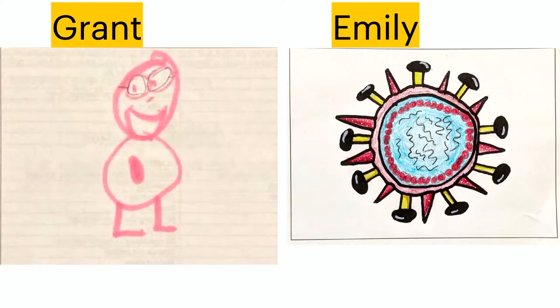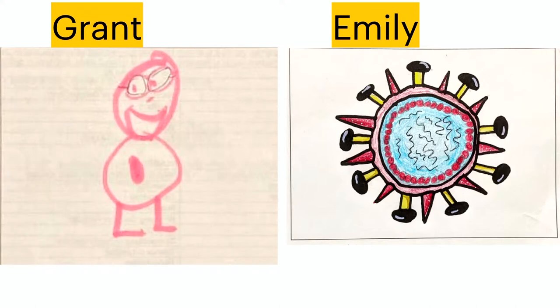Grant and Emily. Emily, I'm going to guess COVID, and Grant, I'm going to guess a bacteria — let's say Staphylococcus, it has a nice round shape. Grant and Emily's was actually influenza, but look at those beautiful colors and that shape — that's fabulous. Very nice. Someone wrote 'Defeatable Math Dad' — that's hilarious.